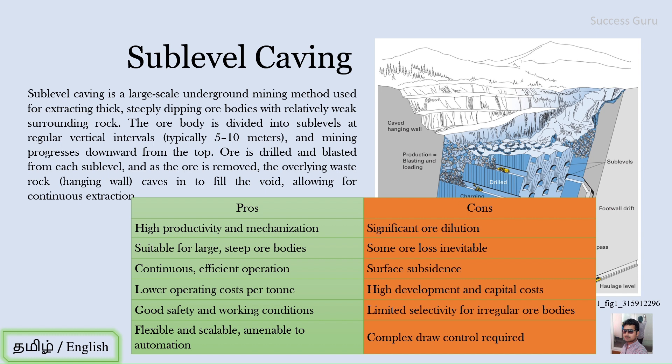Fifth, when the ore body is irregular there is limited selectivity — care must be taken to break the ore only and not the country rock, since breaking the country rock causes further dilution. Sixth, complex draw control is required: since both the country rock and ore body fall into the sub-level, you must ensure only the ore body is being removed.